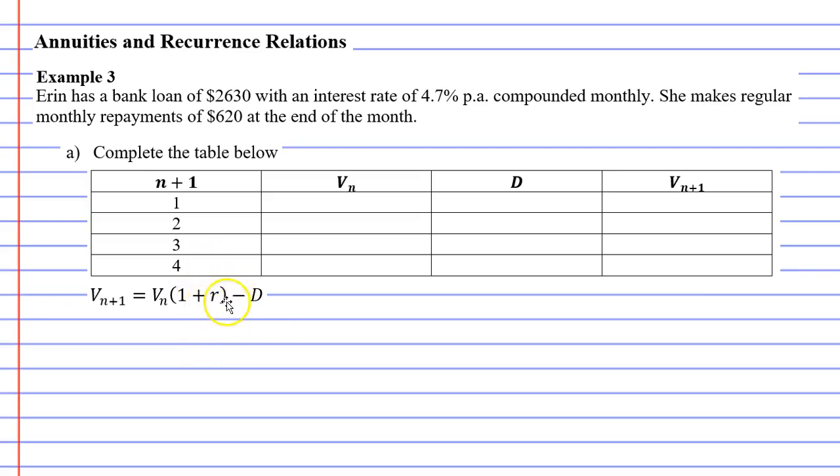We need to start by finding R, our interest rate as a decimal, and D, which is our repayment. Our repayment is the easy one. D is going to be $620. That's the repayment that we're paying at the end of the month.